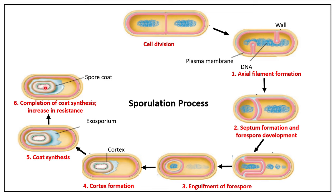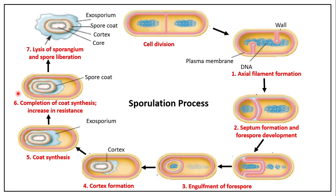Completion of coat synthesis results in increased resistance and formation of the calcium-DPA complex inside the core. Finally, the vegetative cell produces lytic enzymes that act on the mother cell (sporangium), causing lysis of the sporangium and liberation of the mature spore. Upon return of favorable conditions, the spore can undergo germination and restart cell division as a vegetative cell.